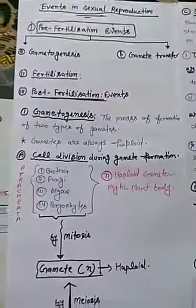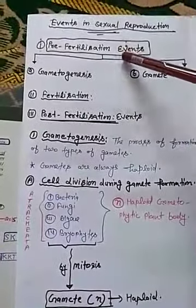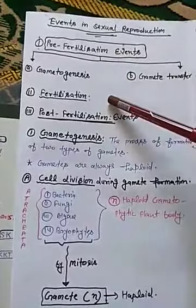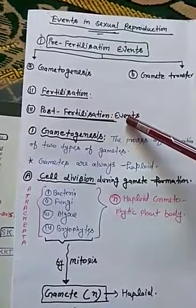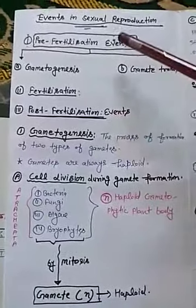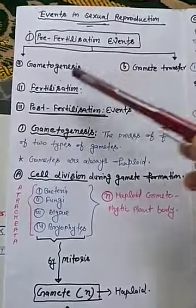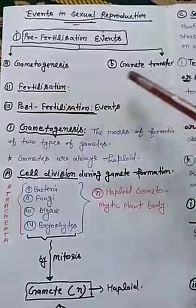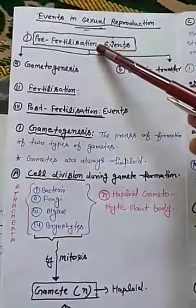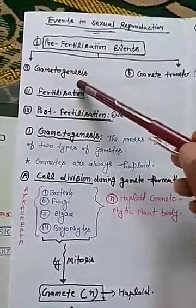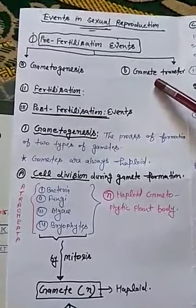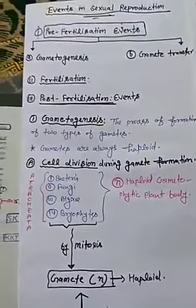Now we start events in sexual reproduction. There are three events in sexual reproduction: pre-fertilization, fertilization, and post-fertilization. Pre-fertilization events are divided into two parts — first is gametogenesis and second is gamete transfer.